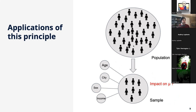Another popular application: if I take a sample of individuals out of a population, can I see what is the impact of certain factors — such as age, the city where people come from, their sex, or their level of income — on the quantity mu that I'm interested in measuring? For example, let's say mu is whether or not you're likely to go to prison. I can look at those factors and see if any of them have an impact on whether someone is likely to end up in prison.